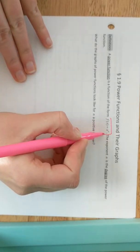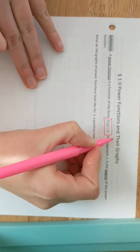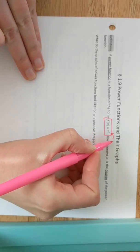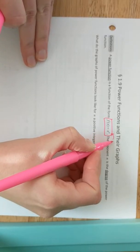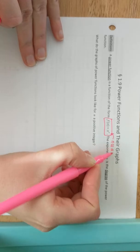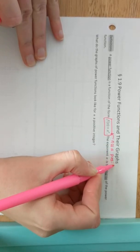Section 1.9 is on power functions and their graphs. A power function is of the form f of x equals x to the n, where n is a whole number or positive integer.